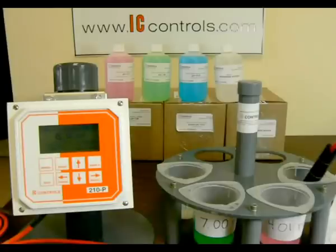After the pH buffer solutions have been used for calibration, IC Controls recommends discarding them. IC Controls also recommend storing your pH sensor in a pH 7 buffer or IC Controls pH storage solution when not in use. Calibrate your sensor each time it is removed from storage for the most accurate measurement.